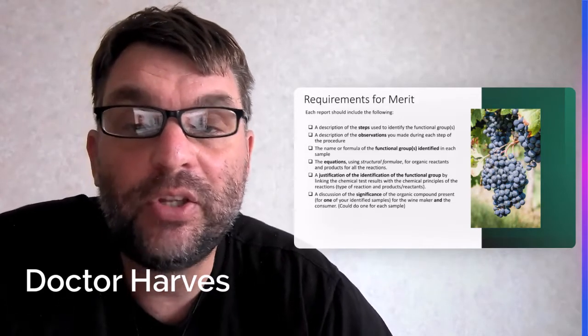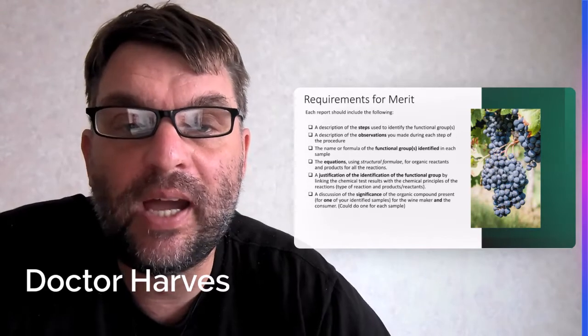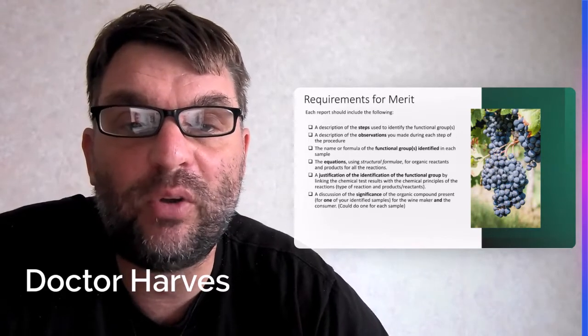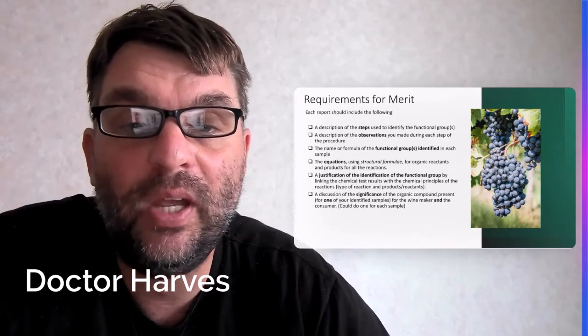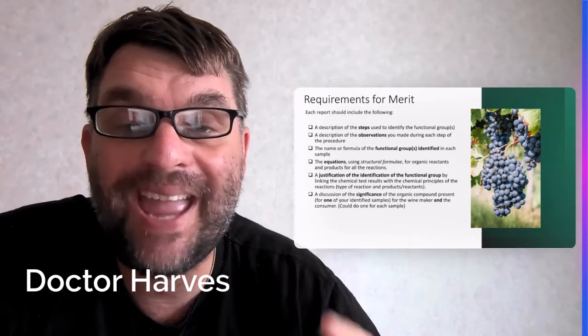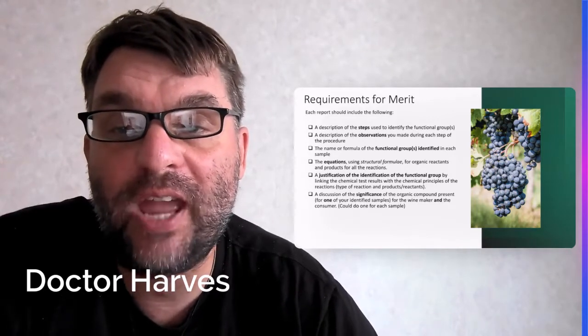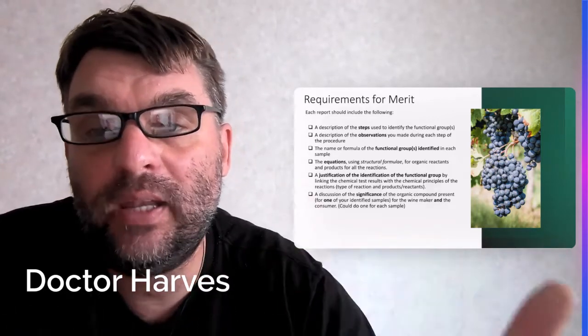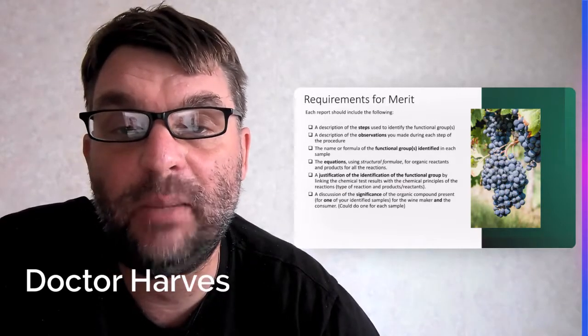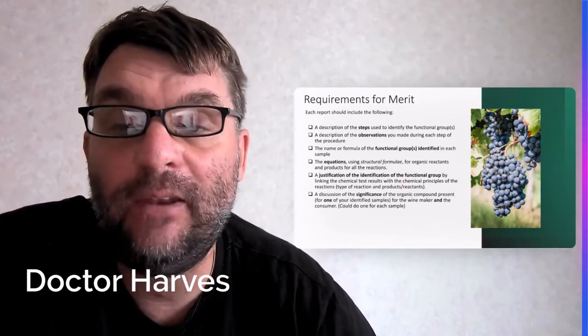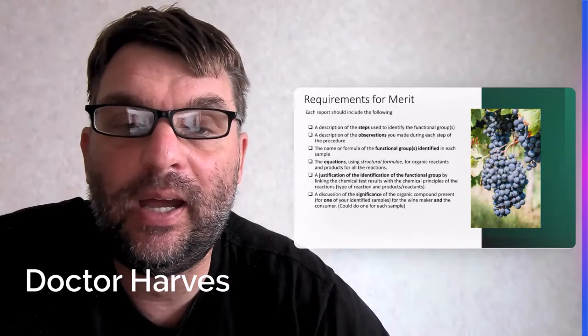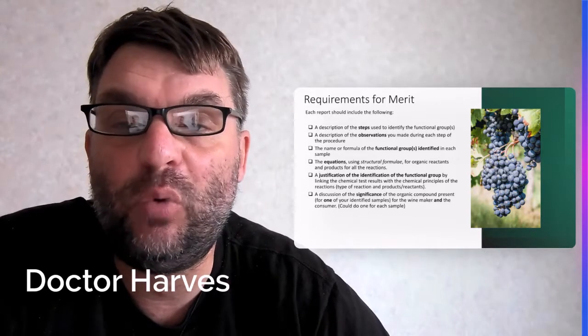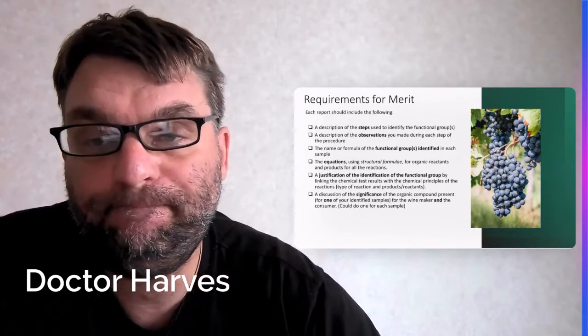And then the discussion becomes a little more in-depth. You have to have the significance of one of the organic compounds for the winemaker and the consumer. So you could have it so you have one unknown, you discuss the implication for the winemaker and for the other, you have the implication for the consumer.